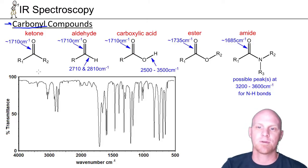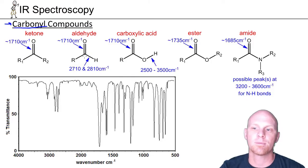You've got ketones, where the carbonyl carbon's bonded to two carbons, R1 and R2. An aldehyde, the carbonyl carbon's bonded to a carbon and a hydrogen. Carboxylic acid, carbon on one side, OH on the other side.